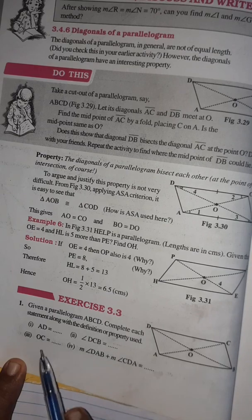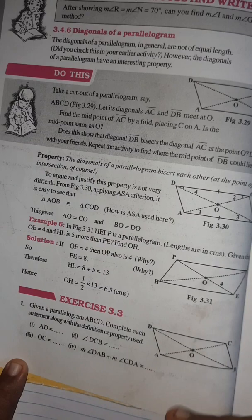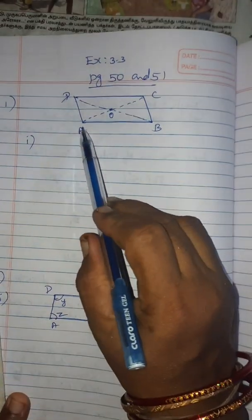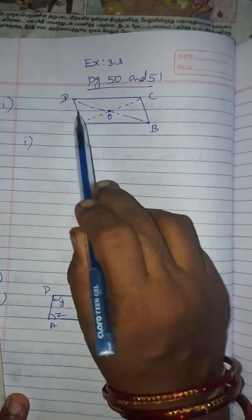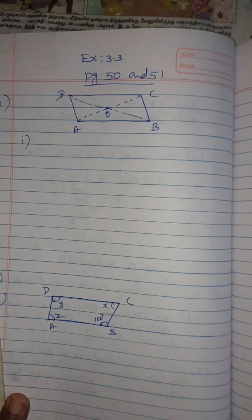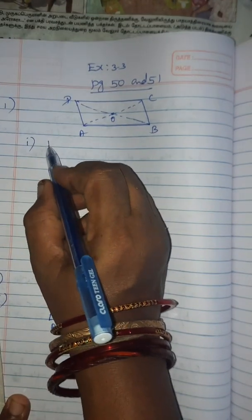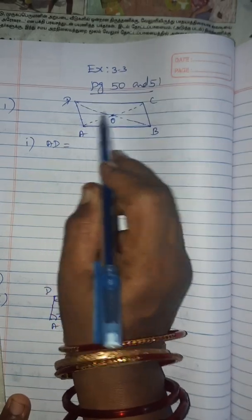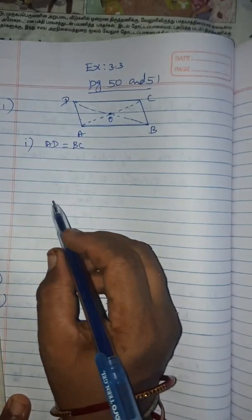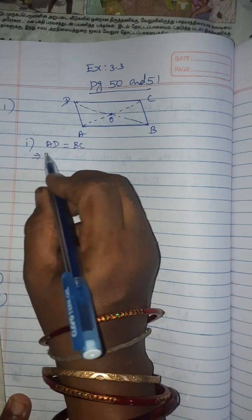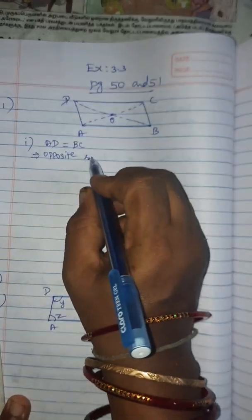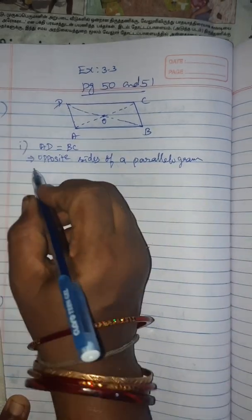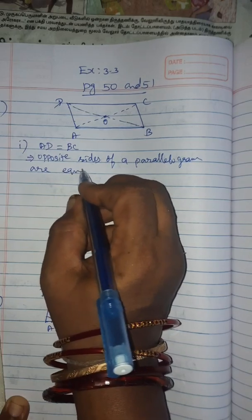First, we have to find AD equal to what. In parallelogram ABCD, AD is one side. AD and BC are opposite sides, so AD is equal to BC. The property used here: opposite sides of a parallelogram are equal.